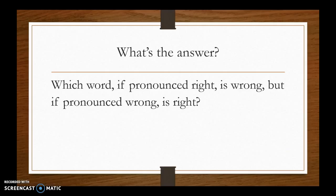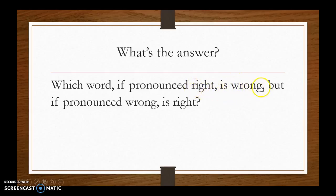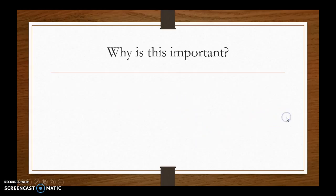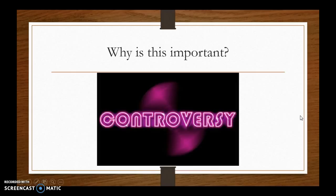One more: which word, if pronounced right, is wrong, but if pronounced wrong is right? The answer is the word 'wrong.' If you look at that word and pronounce it correctly, you'd be saying 'wrong' — which means you're wrong. But if you pronounced it wrong, you'd be correct. Super tricky!